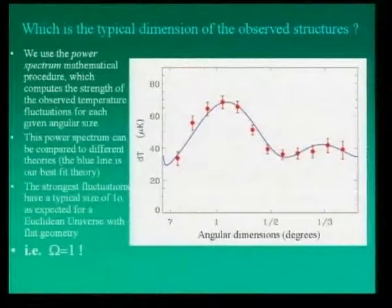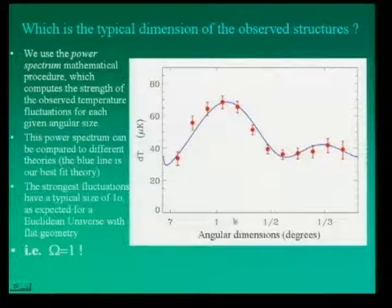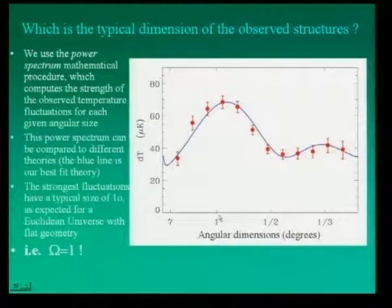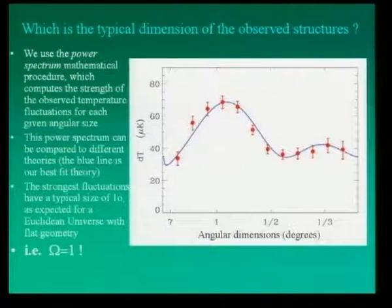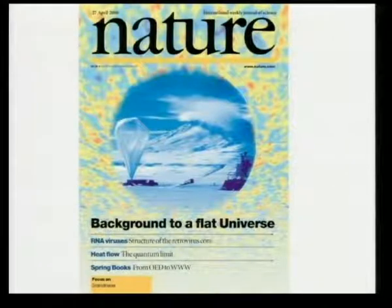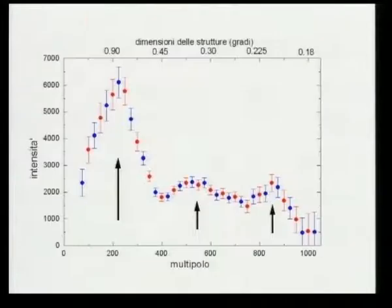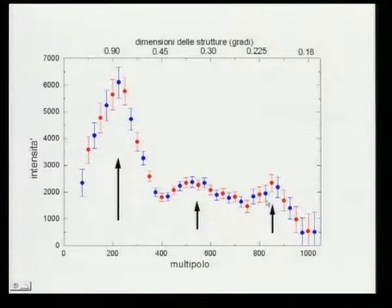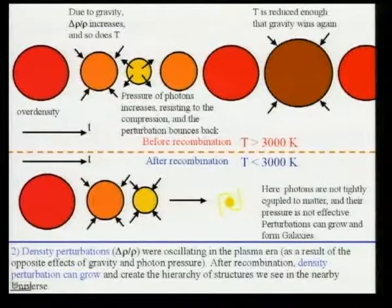The distribution of angle size of structure versus temperature shows the peak at an angle of about one degree. This is the main result: if the size of the spots is one degree, the curvature of the universe is zero and the density of the universe is the critical density. This was published in Nature. Analyzing more data, we found this first peak at one degree but also two additional peaks, which are expected from theory.